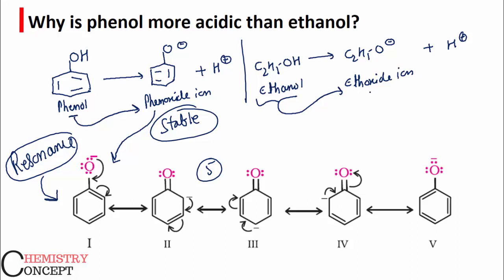There is no such resonance stabilization in the case of the ethoxide ion. Therefore, phenoxide ion is more stable than ethoxide ion, and that is why phenol is more acidic than ethanol. The reason behind the stability of phenoxide ion is resonance.